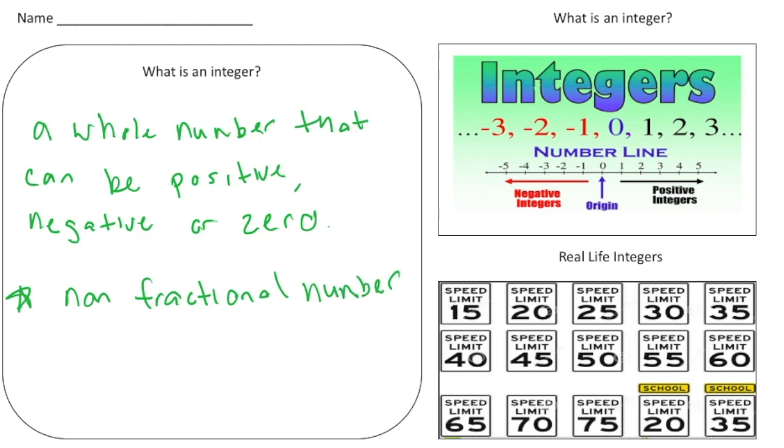So an example of an integer could be say the number 17, or the number say 18, and so on. These could also be negative 17 or negative 18. But an example of a non-integer would be something like say one-fourth that makes it a fraction. So one-fourth is not an integer.